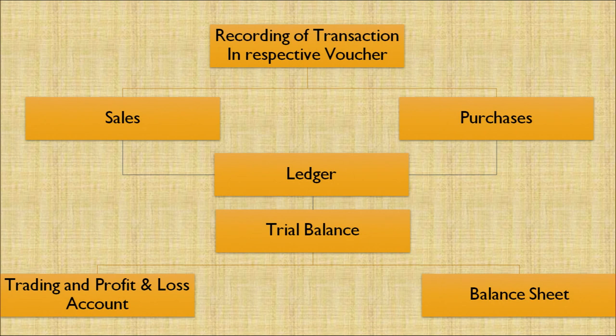Let's now discuss the roles of a computer in accounting. While recording a transaction in respective accounting vouchers — which could be sales, purchase — both sales and purchase go into the ledgers, and the ledgers impact our trial balance. After preparing a trial balance, there is a trading account, a statement of profit and loss account, and a balance sheet. All these accounting entries can be passed through the computer and computer systems.